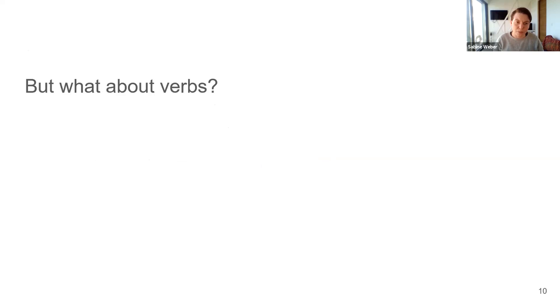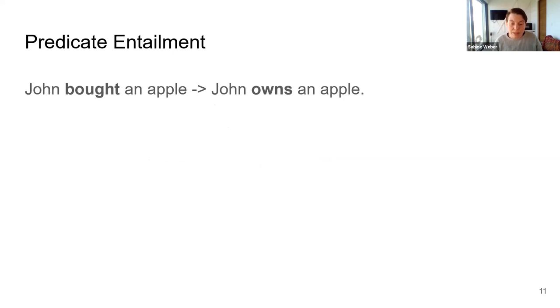So while Geffet and Dagan very generally talk about words, they only tested it on 200 English nouns. So naturally we can ask, what about verbs? That's another just common and important type of word. This brings us to what I have worked most intensely on in my PhD and what basically our whole research group is looking at under different angles, and that is predicate entailment or the entailment between verbs as they appear in sentences.